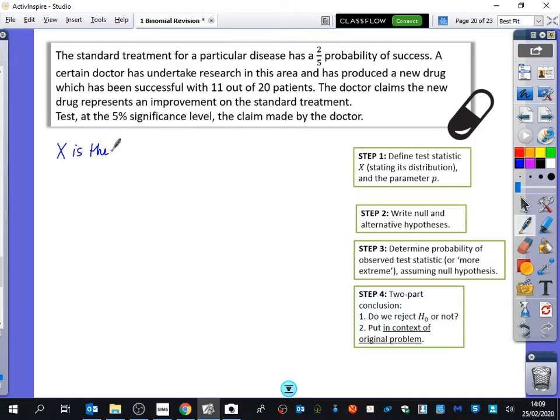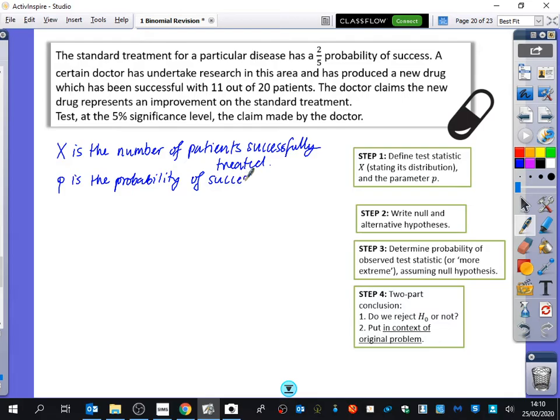So we'll just define the test statistic. So X is, what is X going to be? The number of patients successfully treated. And P is the probability of successful treatment. So X is binomially distributed with 20 people in that small sample that he took with probability P. In our case, it's going to be two-fifths. That's what we think. Let's pretend the doctor is wrong. The null hypothesis is just saying, I think everything is just as it is. The null hypothesis is that probability is two-fifths, but I just prefer to go with 0.4.